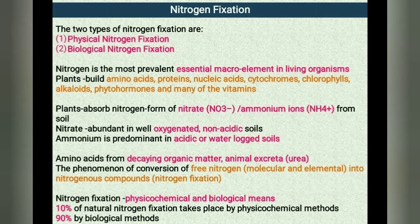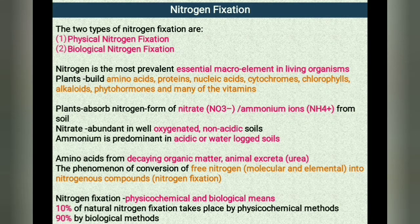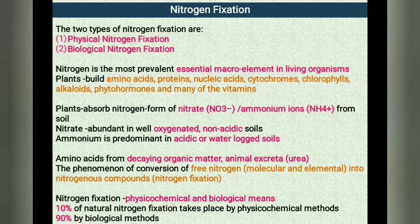Plants mainly absorb the nitrogen in the form of nitrate or ammonium ions from the soil. Nitrate is the most abundant in well-oxygenated, non-acidic soil while ammonium is predominant in acidic or waterlogged soils. Other sources of available soil nitrogen may be amino acids from decaying organic matter, animal excreta and chemical fertilizer that can be absorbed directly by the plants.